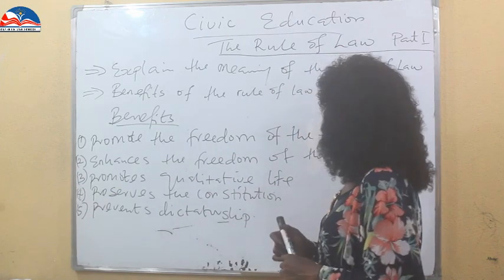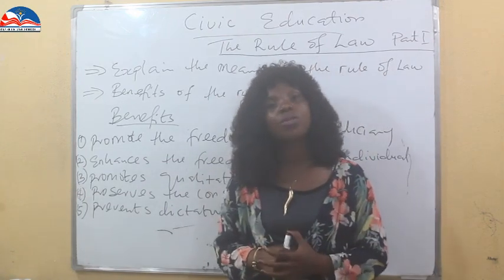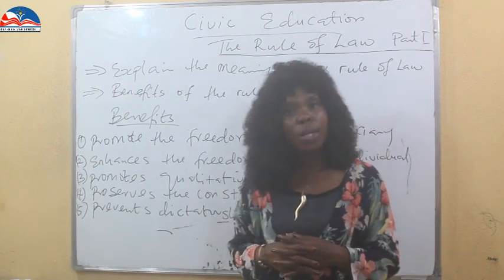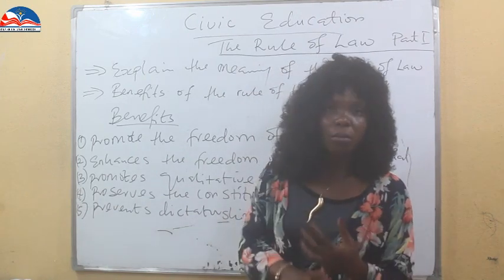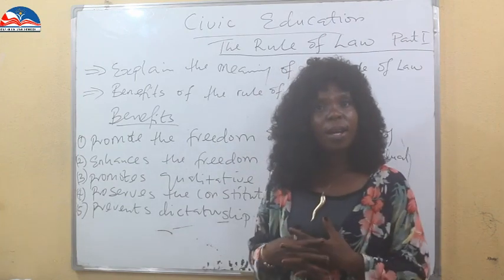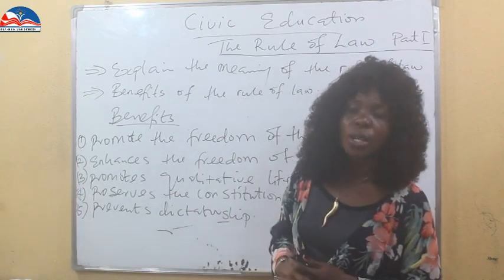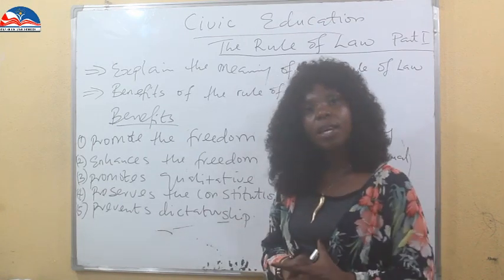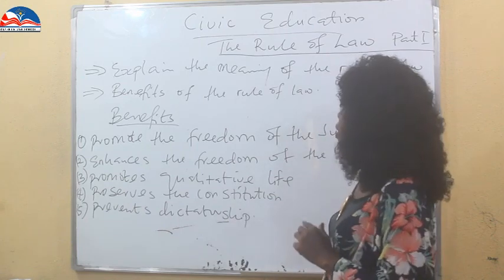The third benefit is that it promotes qualitative life. Every person belonging to the country has the right to benefit from social welfare and good quality life amenities. For example, they have the right to a minimum standard of living, good road communication, and social welfare packages — anything that will make life better and healthy for individuals belonging to the country. The rule of law promotes qualitative life for the citizenry.